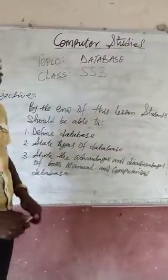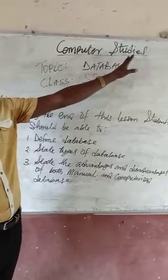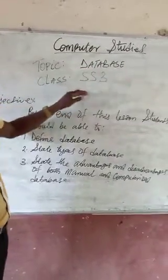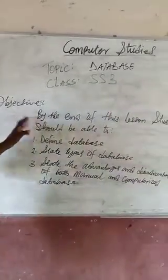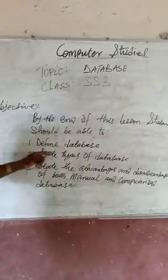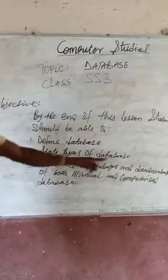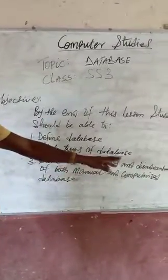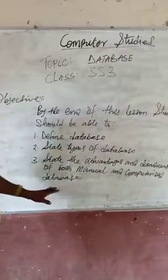Good morning students. Today we are going to take a look at the subject computer studies, topic: database, class SS3. Objectives: by the end of this lesson, students should be able to define database, state types of database, and state the advantages and disadvantages of both manual and computerized database.